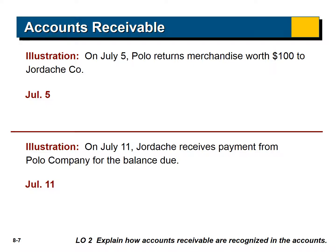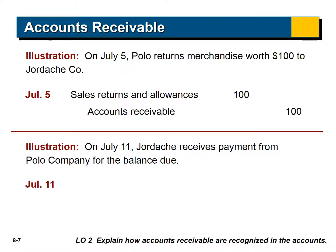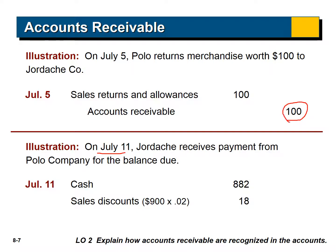On July 5th, they return merchandise worth $100. As a refresher, we have the account sales returns and allowances which reduces the receivable — the amount the customer owes us. Then on July 11th, Jordache receives payment for the balance due. The payment is $1,000 minus the $100 return, so they owed $900. They paid within 10 days, so they got the 2% discount, and the balance is $900.